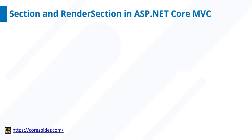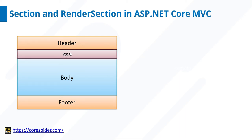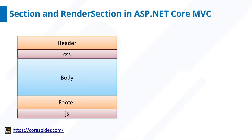Before jumping to section and render section, let's first understand the basic structure of our application. Every application has a header, a body, and a footer. The application stylesheet is placed in the header part, meaning all the CSS is placed there. The JavaScript files are placed below the footer element. This is a common structure of almost every application, and every page can inherit this common layout page.